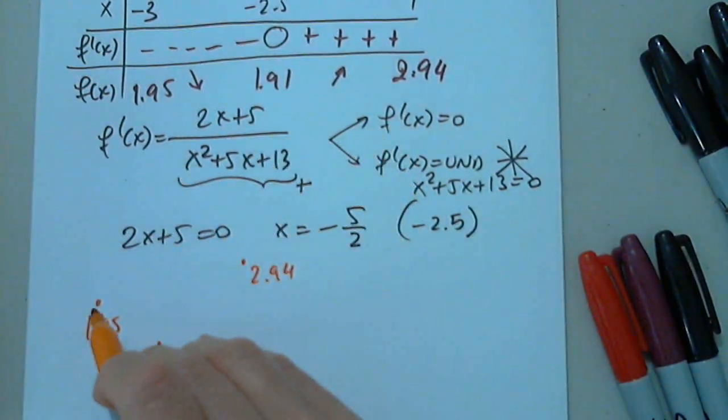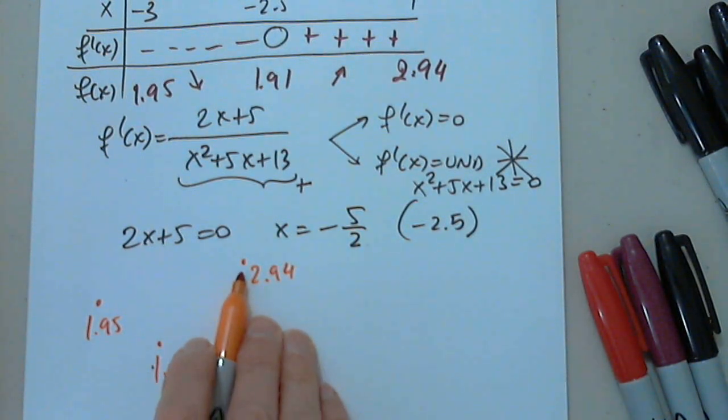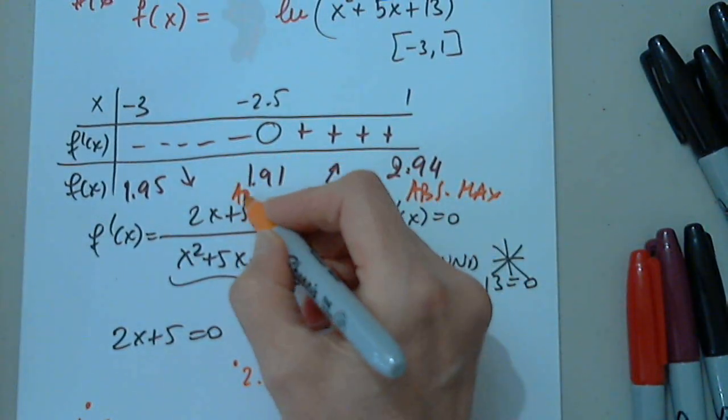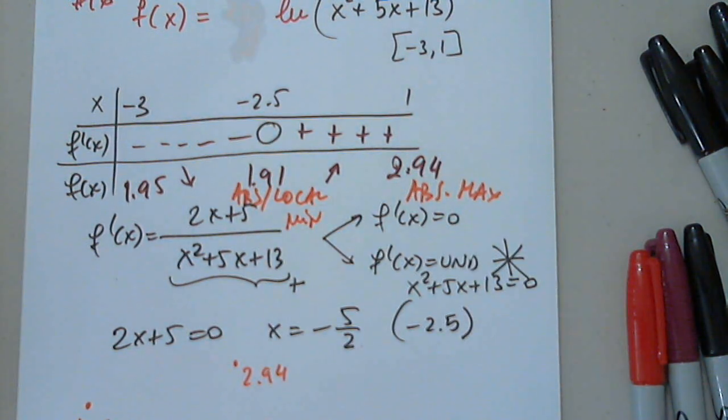So the function values are like this: 1.95, a little bit lower 1.91, and much higher 2.94. I'm not graphing the function. I'm just saying, obviously this is the absolute min and relative min. This is absolutely nothing, and this is the absolute max, and this one is the absolute and local min.